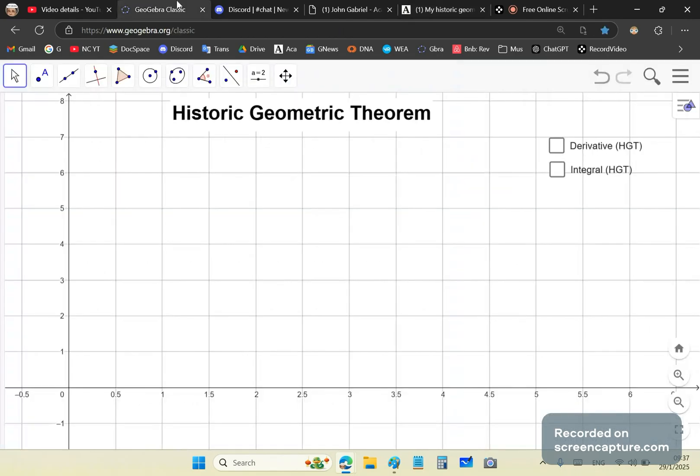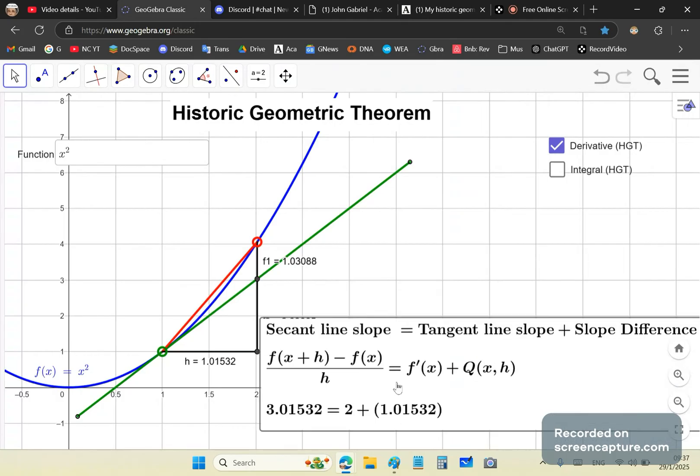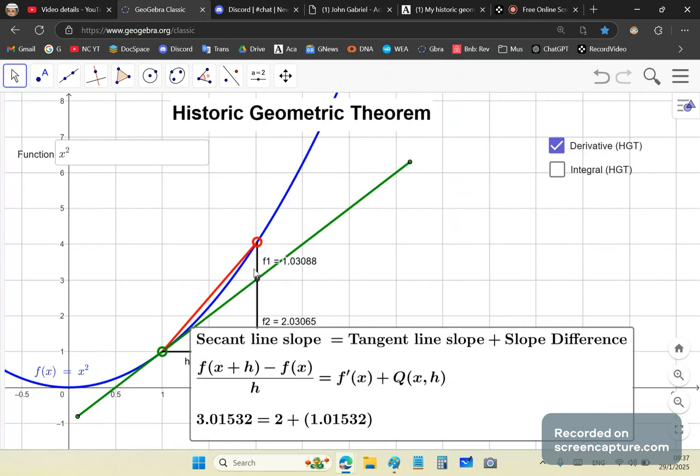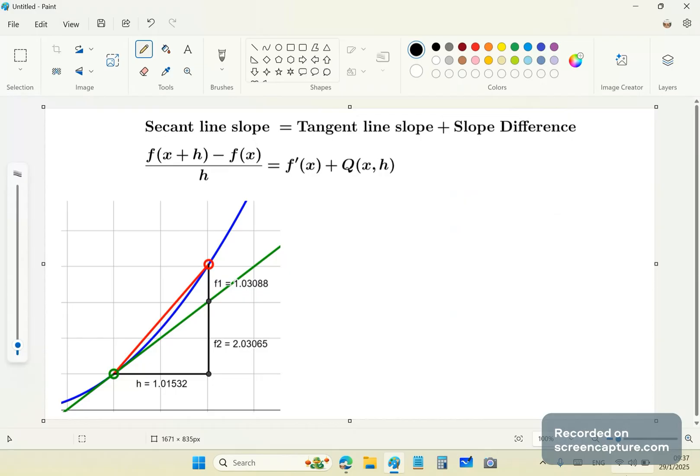So, let's begin. I'll show you with a slew of functions. So, let's begin with the most common, x squared. See? You see it here? x squared. So, the secant line slope is equal, the red secant line slope is equal to the tangent line slope, the green tangent line slope, plus a slope difference, this f1.